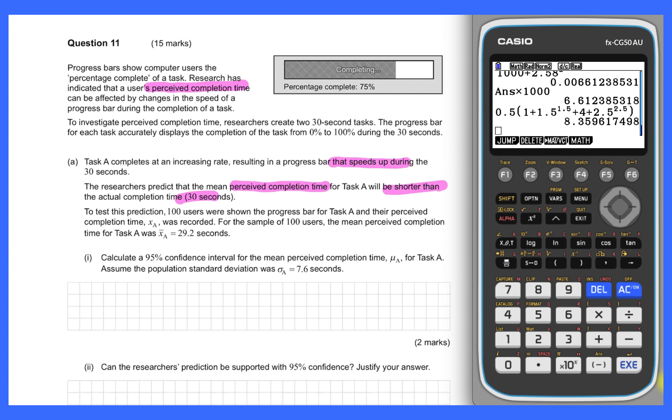So another little feel quicker than it actually is, and the test for this was 100 users. They were asked to estimate perceived, some sort of perception of time taken. The value we have here is x bar equals 29.2 seconds, just a little bit less than 30. We're going to do a confidence interval for the mean perceived time based on that sample of 100 users. We've got a sample population standard deviation of 7.6, so it's back to stat mode we go.